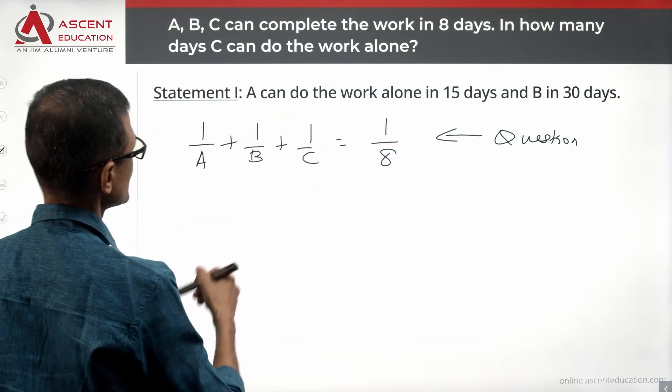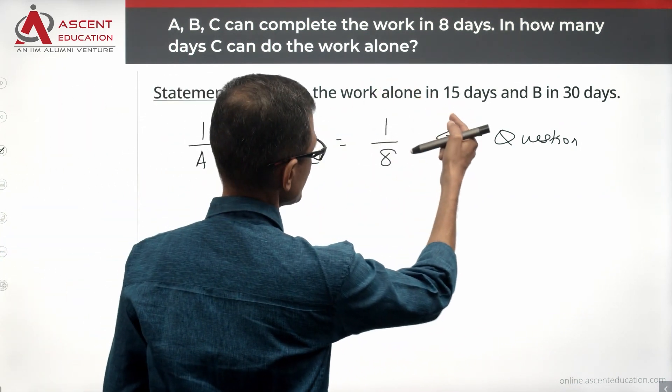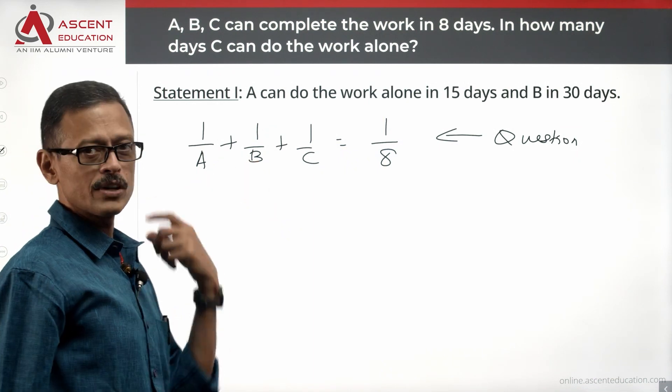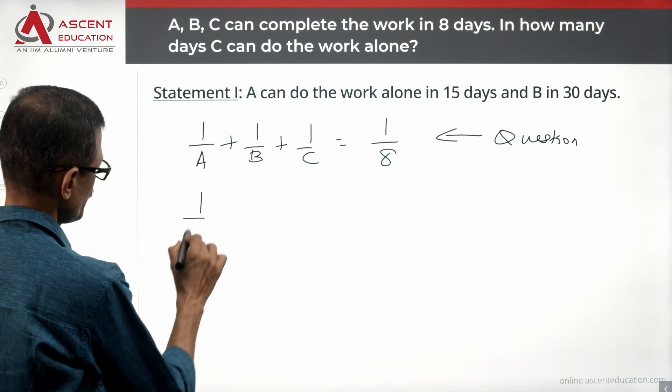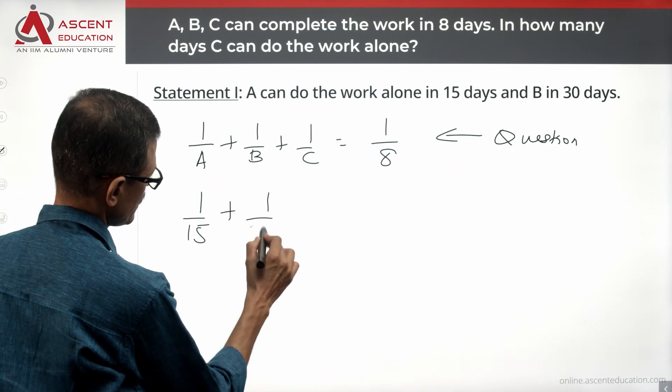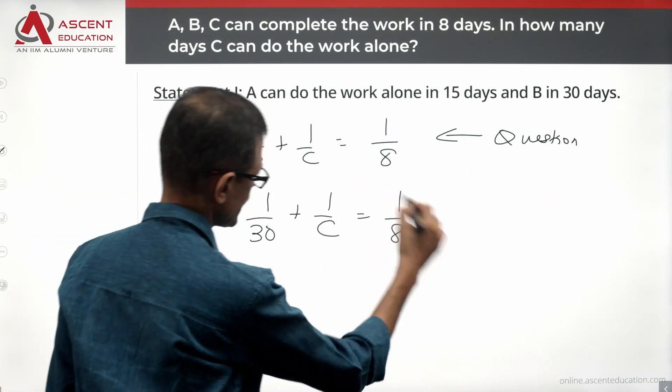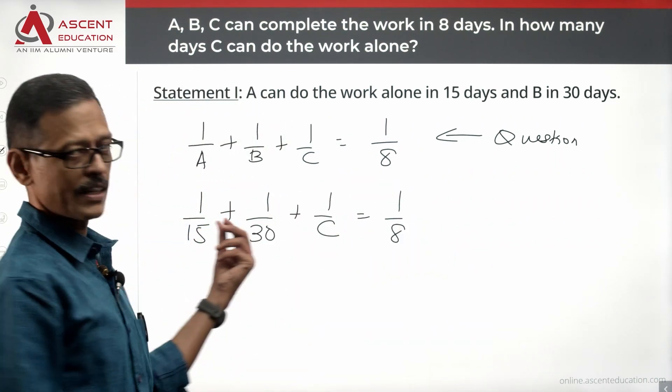Statement 1 says A can do the work in 15 days, B can do it in 30 days. So A's value is 15, B's value is 30. So 1 by 15 plus 1 by 30 plus 1 by C is equal to 1 by 8.